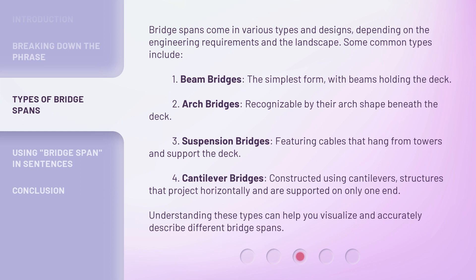Bridge spans come in various types and designs depending on the engineering requirements and the landscape. Some common types include: one, beam bridges — the simplest form, with beams holding the deck; two, arch bridges — recognizable by their arch shape beneath the deck; three, suspension bridges — featuring cables that hang from towers and support the deck; and four, cantilever bridges — constructed using cantilevers, structures that project horizontally and are supported on only one end.